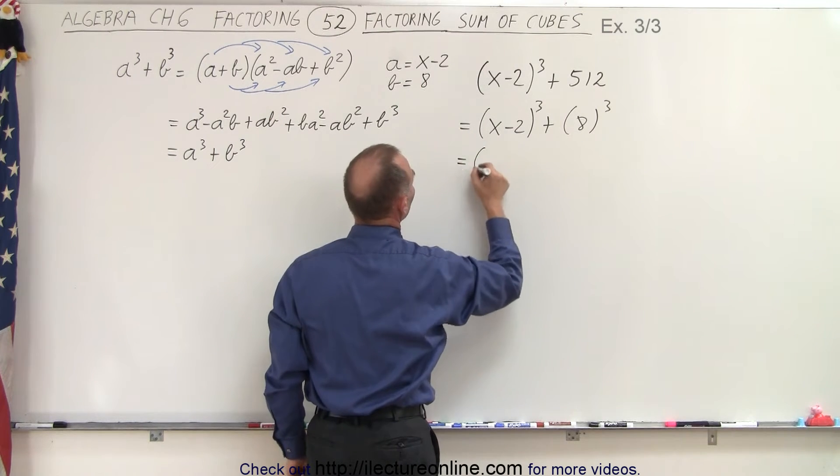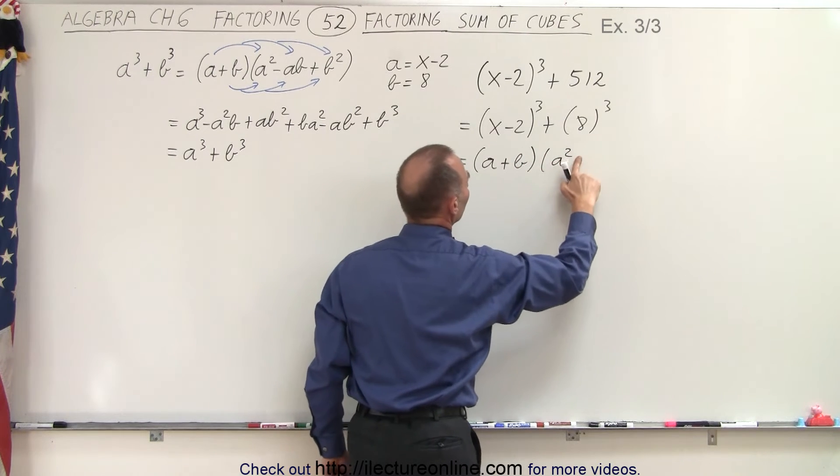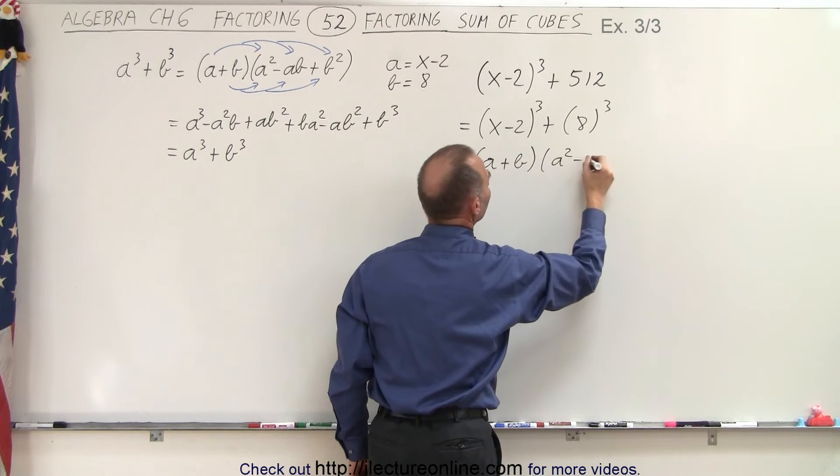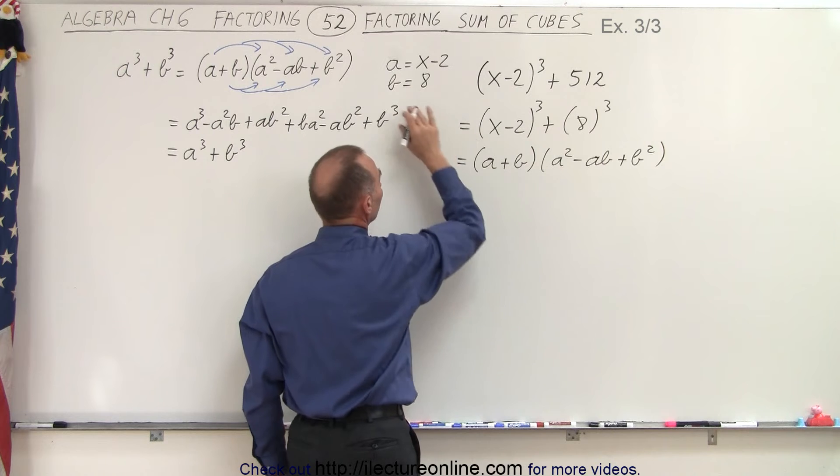So this can be written in general as (a+b) times (a² - ab + b²). And then we simply match up what these are equal to.